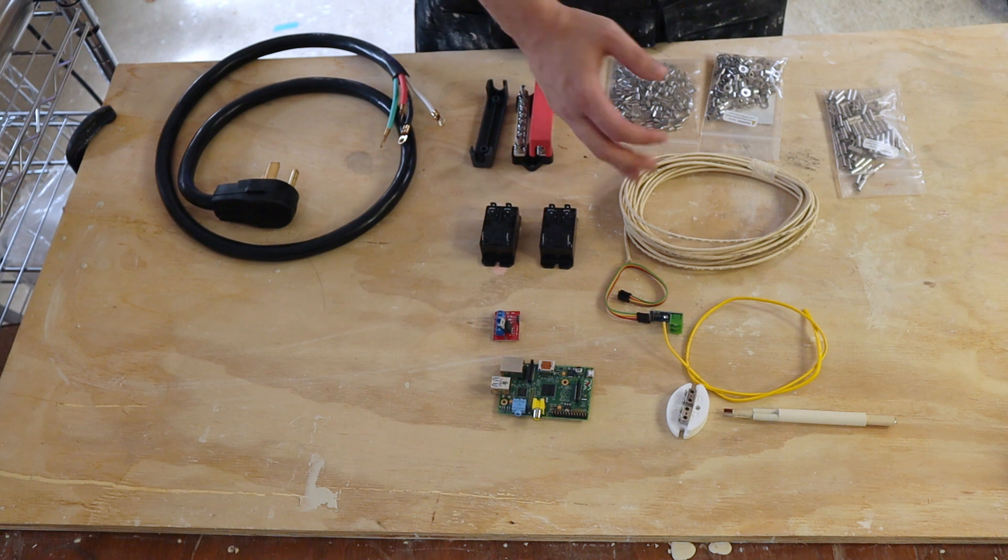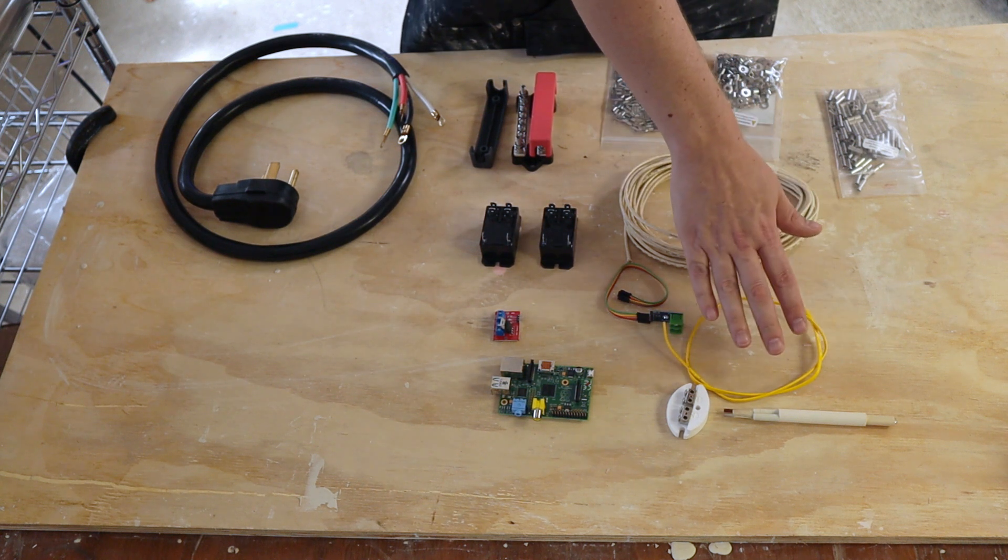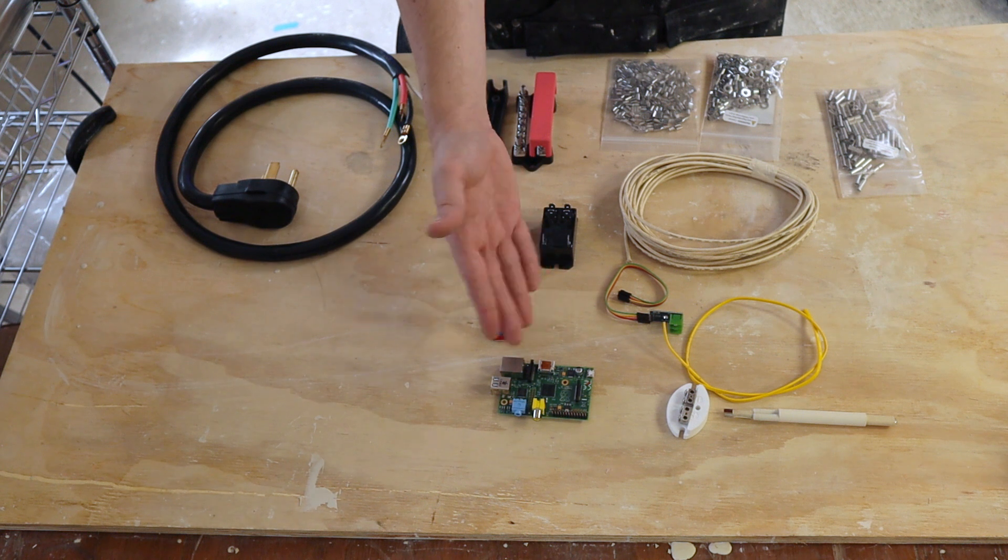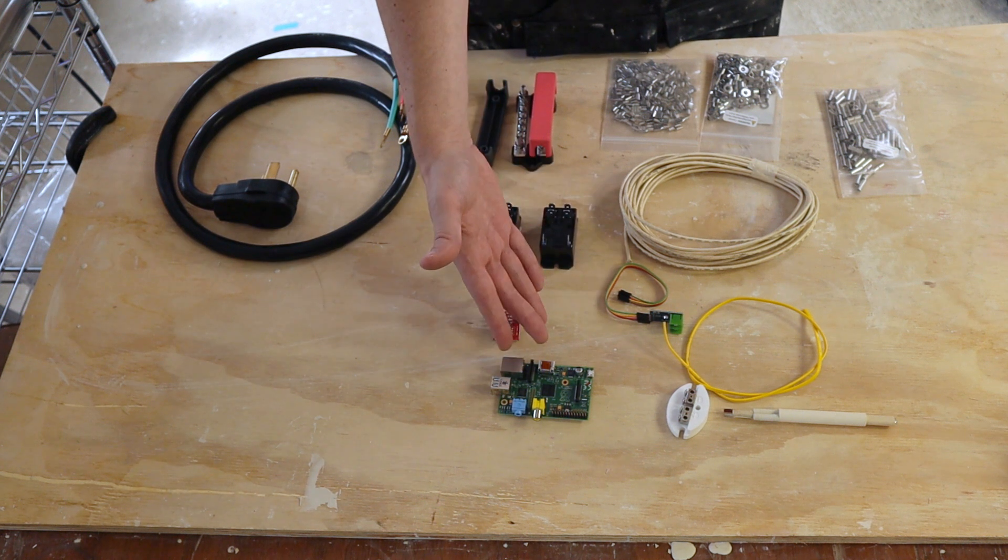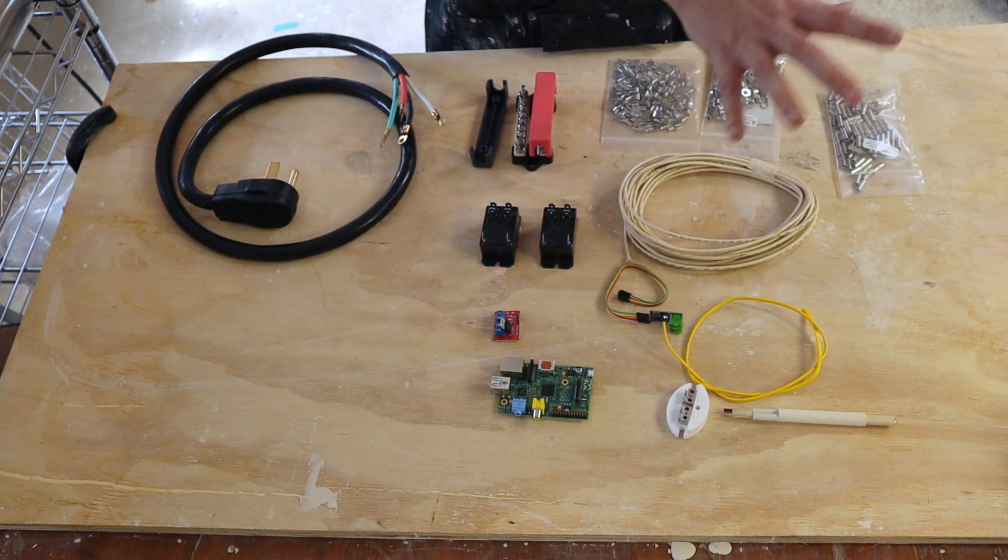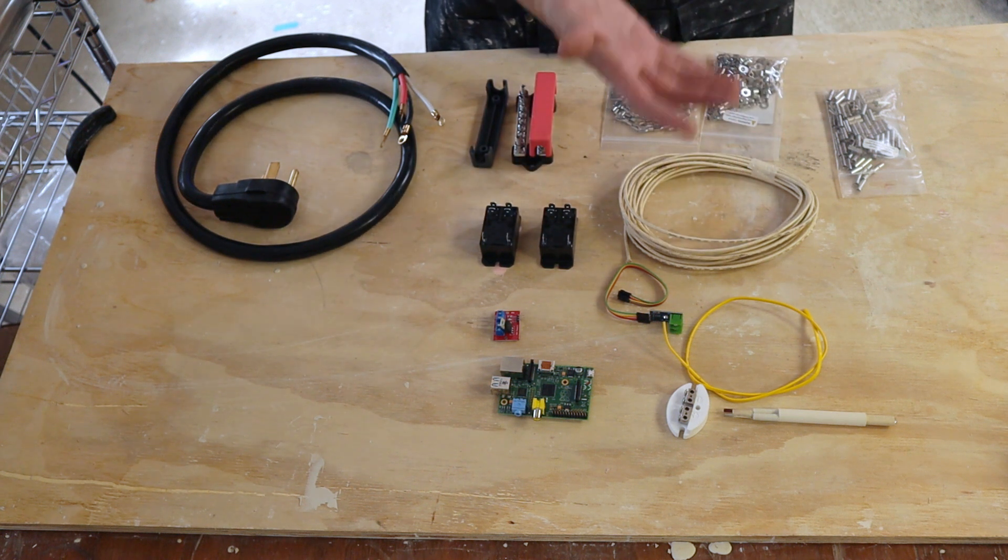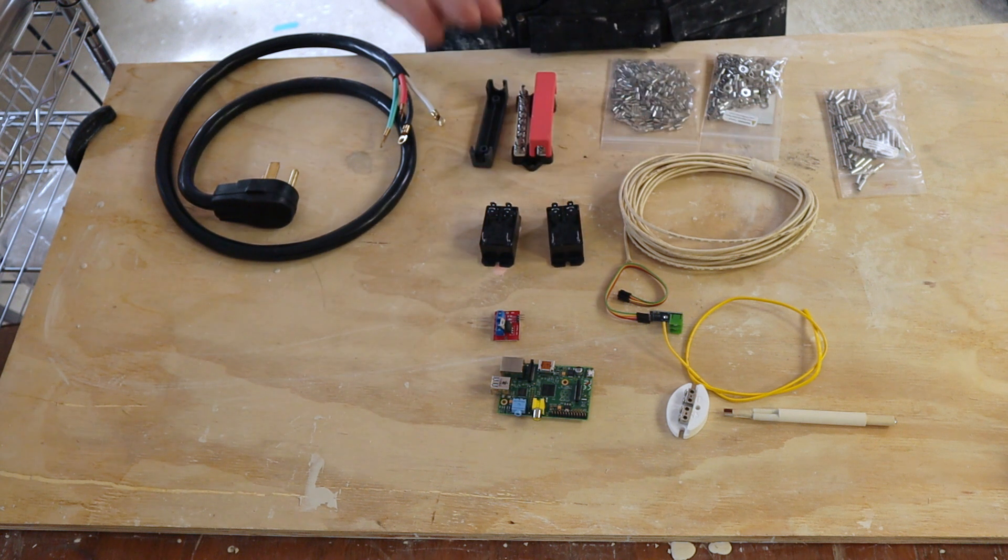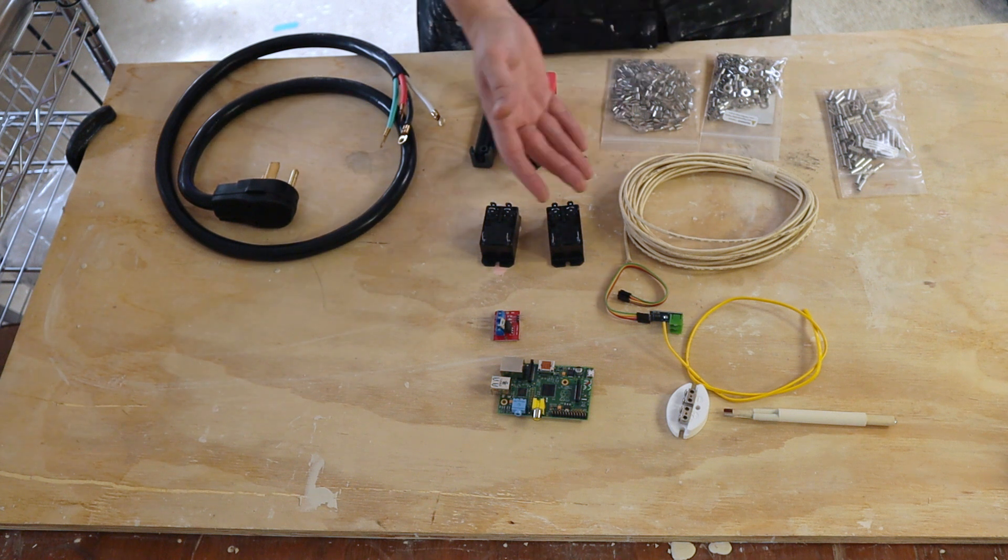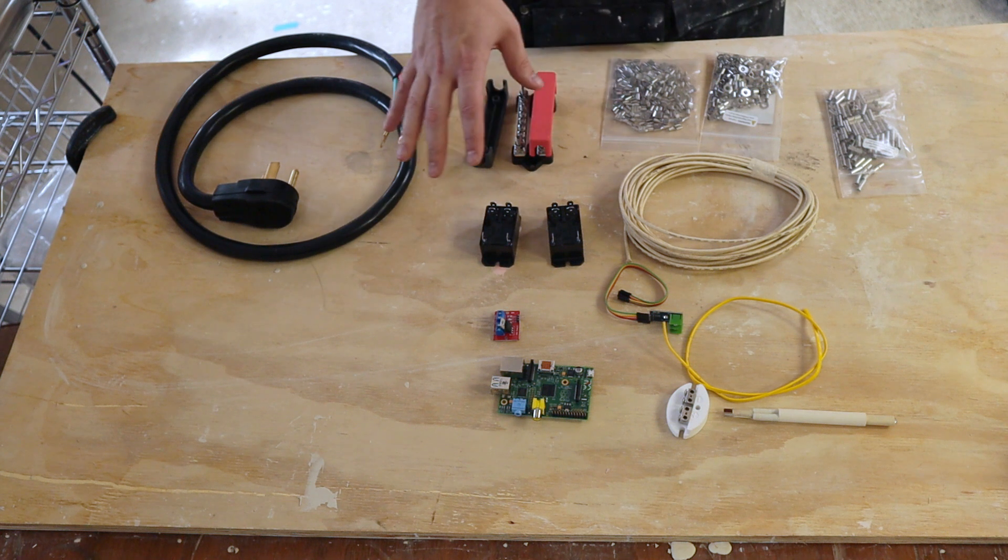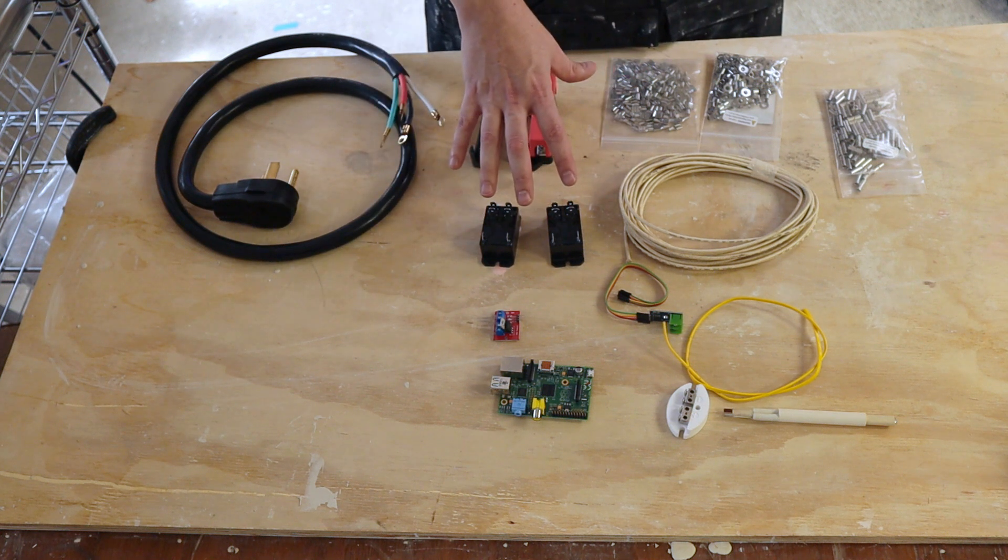So the way the system will work in the end is the thermocouple will be on the kiln. It'll read the temperature. Through this board the Raspberry Pi will see okay it's at whatever temperature and it will call for heat. When it calls for heat it'll send a signal through the MOSFET to the relays, to the elements, turn on the power. It'll turn it on for a while, when it's done it'll turn it back off and cycle on and off until we gradually raise up to temperature. We can also do a slow cool if we wanted. We can do holds. Because this is digitally controlled now we can do any temperature profile we want.